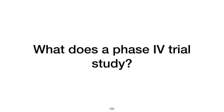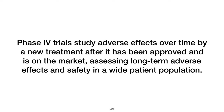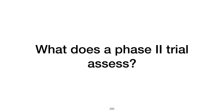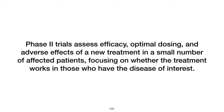What is studied in a Phase IV trial? A Phase IV trial studies adverse effects caused over time by a new treatment after it has been approved and is on the market, assessing long-term safety and effectiveness and monitoring for rare or delayed side effects in a larger, more diverse population. A Phase II trial assesses the efficacy of a drug or treatment and further evaluates its safety, aiming to determine if the drug works for a specific condition and to gather more information on dosing and side effects.